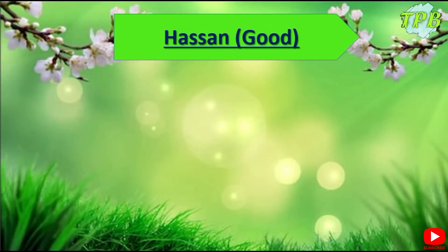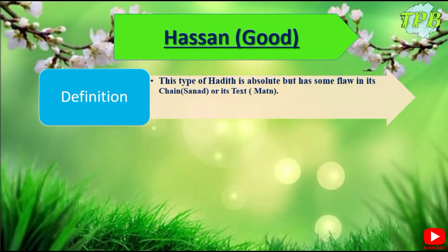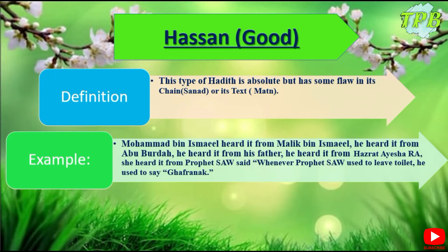Now let's come to the second one: Hassan, that is good. This type of Hadith is absolute but has some flaw in its chain, Sanad, or its text, that is Matan. The example is: Muhammad ibn Ismail heard it from Malik bin Ismail, Malik bin Ismail heard it from Abu Burda, Abu Burda heard it from his father, his father heard it from Hazrat Aisha.